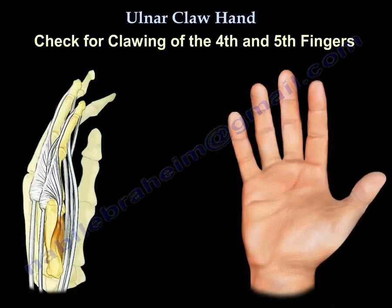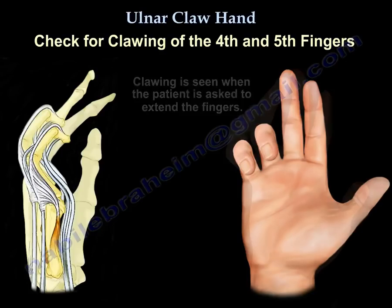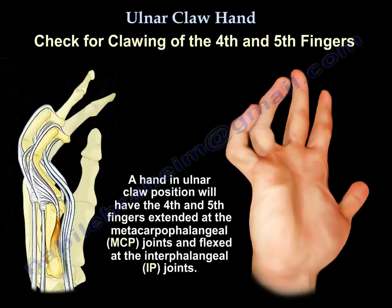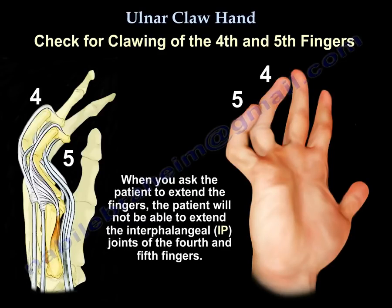How do you check for clawing? Clawing is seen when the patient is asked to extend the fingers. A hand in the ulnar claw position will have the fourth and fifth fingers extended at the MCP joint and flexed at the IP joints — the interphalangeal joints. When you ask the patient to extend the fingers, they will not be able to extend the interphalangeal joints of fingers four and five.